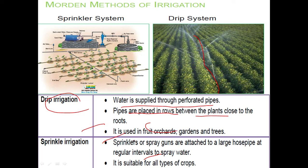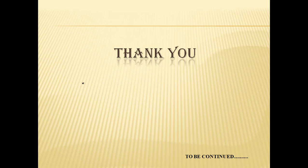In the sprinkler system, spray guns are attached to large hose pipes at regular intervals to spray water onto crops. It is mainly used for all types of crops. Water flows from the main pipe to smaller pipes with the help of a pump. This method is also suitable for uneven land, land with water scarcity, and sandy regions. Both the sprinkler and drip irrigation methods are modern methods with no wastage of water. Thank you, and further classes will be continued.